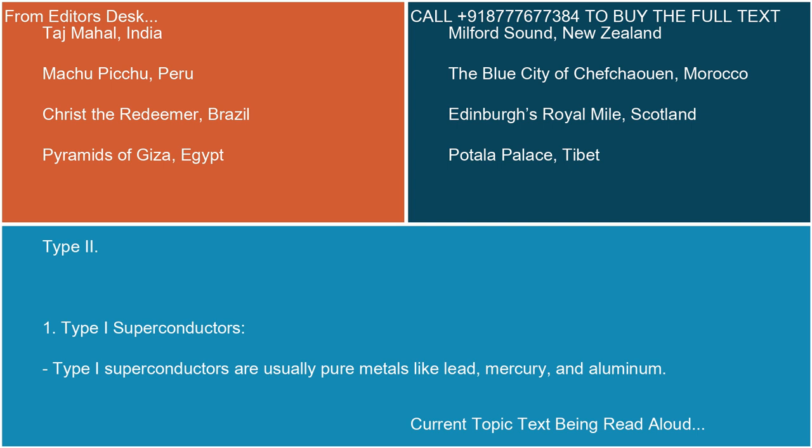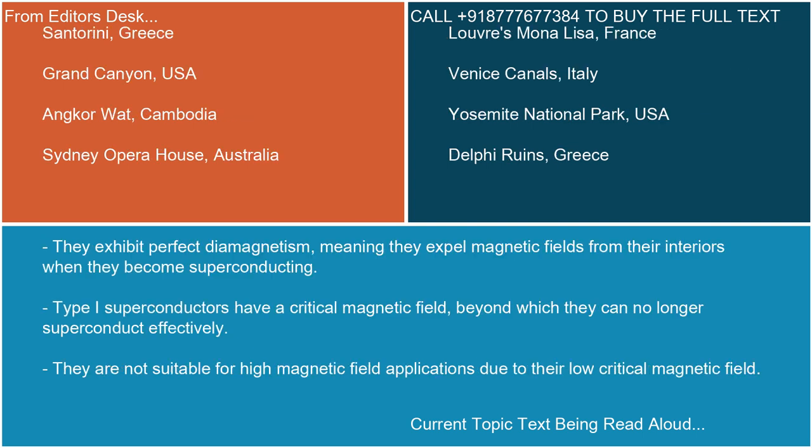Type I superconductors are usually pure metals like lead, mercury, and aluminum. They exhibit perfect diamagnetism, meaning they expel magnetic fields from their interiors when they become superconducting. Type I superconductors have a critical magnetic field beyond which they can no longer superconduct effectively, and they are not suitable for high magnetic field applications due to their low critical magnetic field.